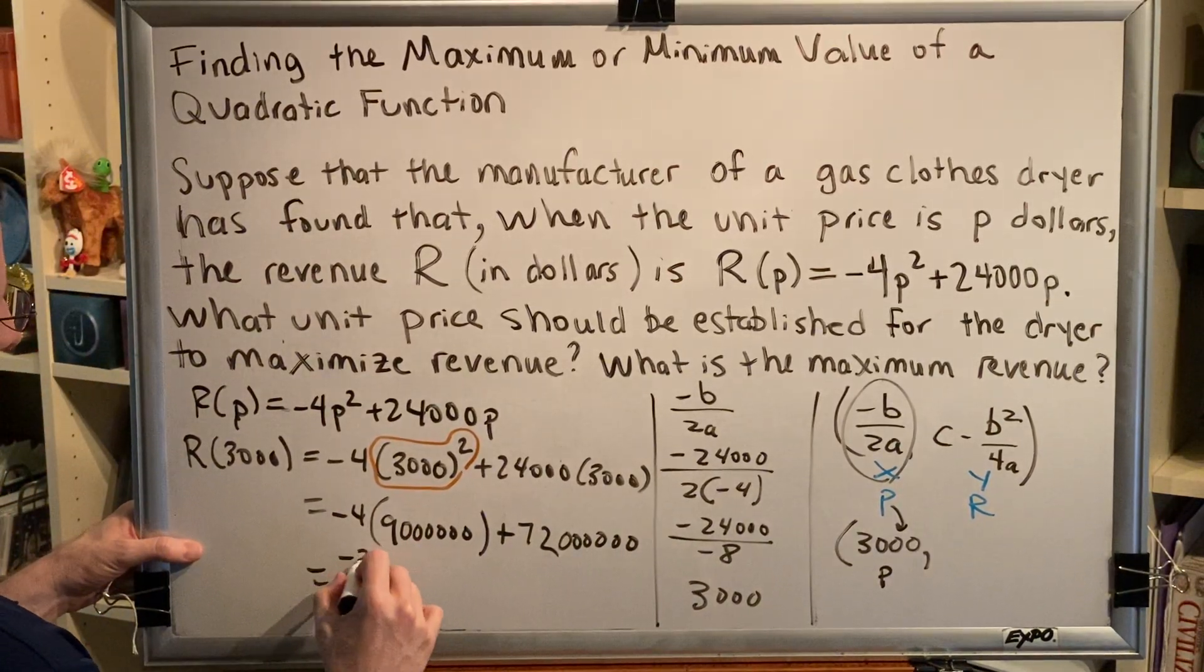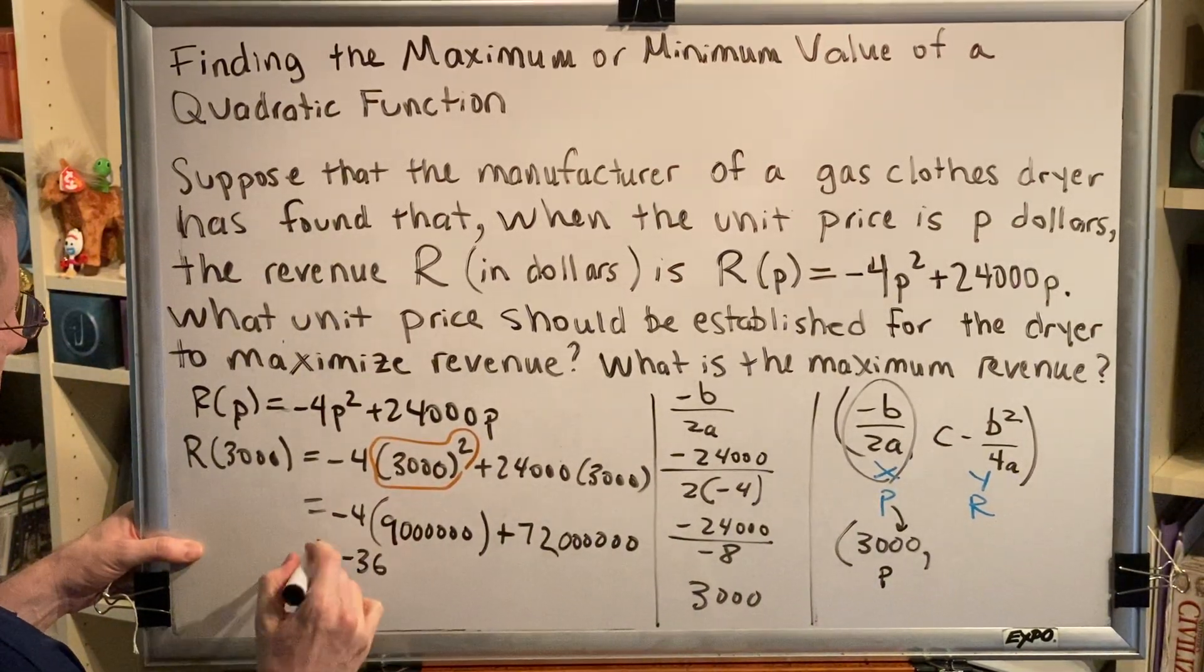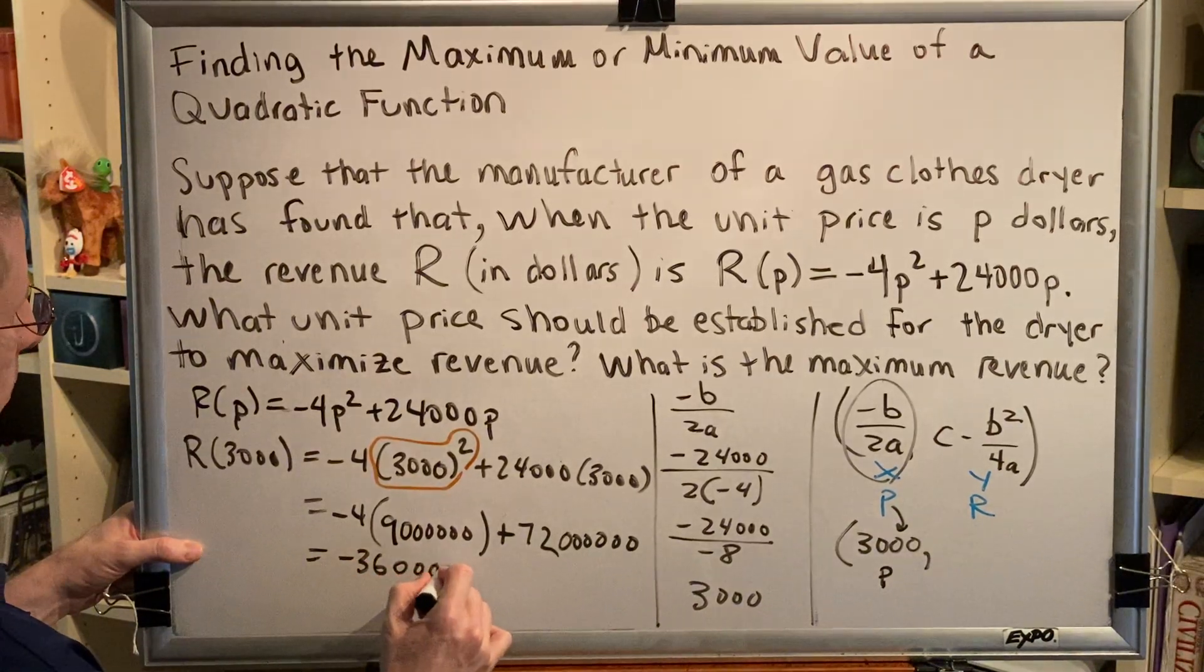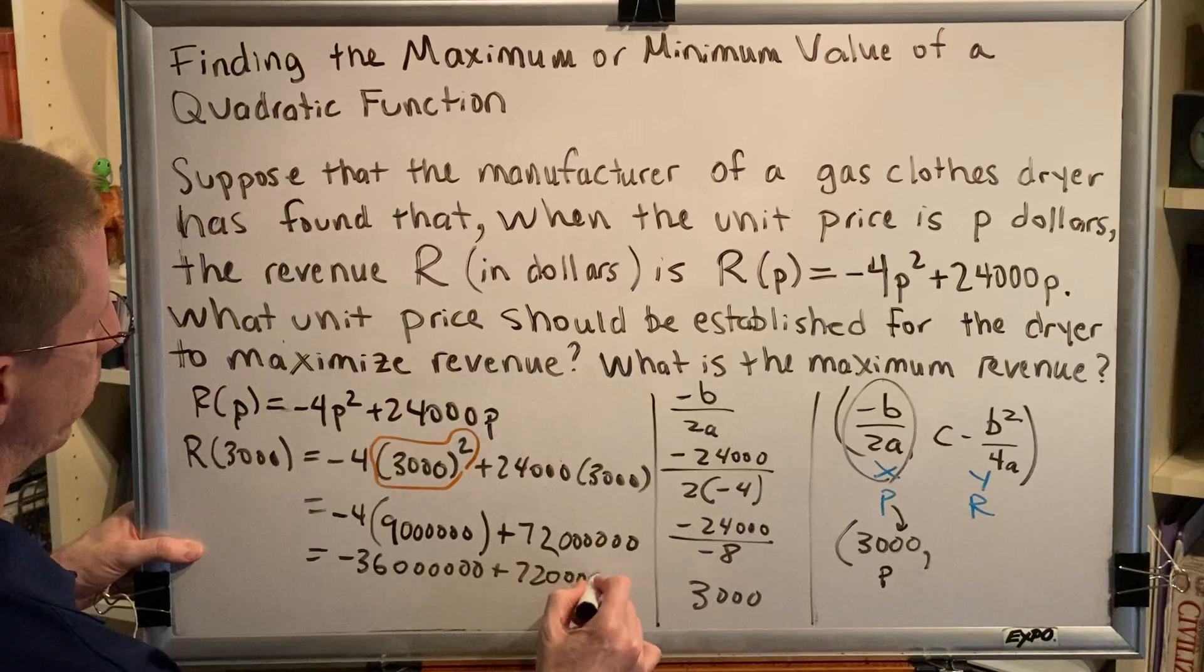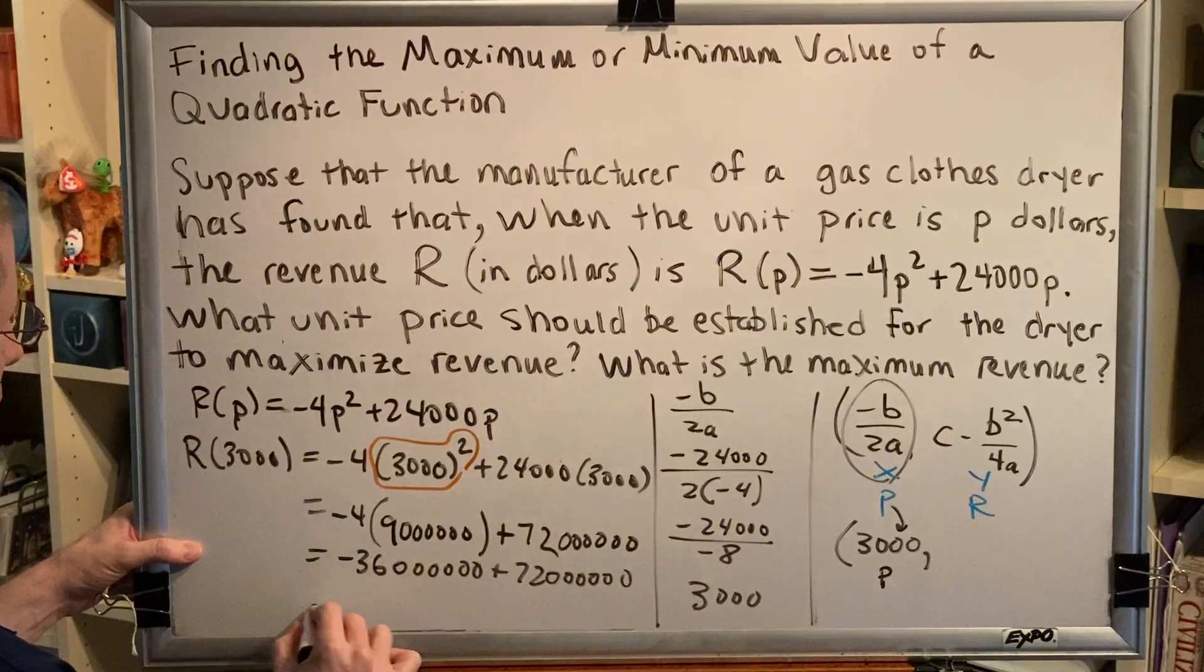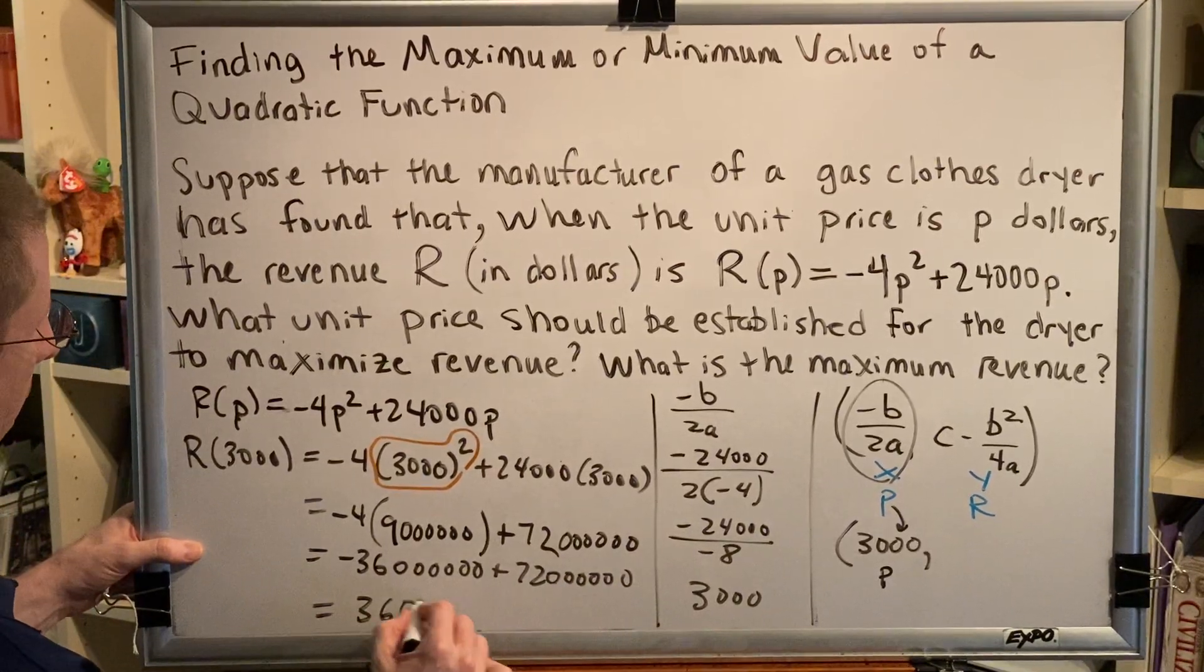24 times 3 is 72, and we also have 6 zeros. 4 times 9 is 36, so we have negative 36, followed by 6 zeros, plus 72, followed by 6 zeros.